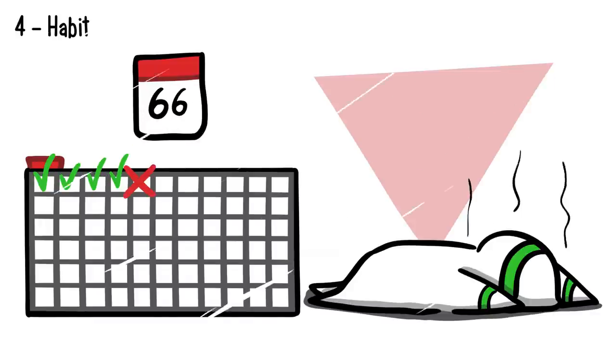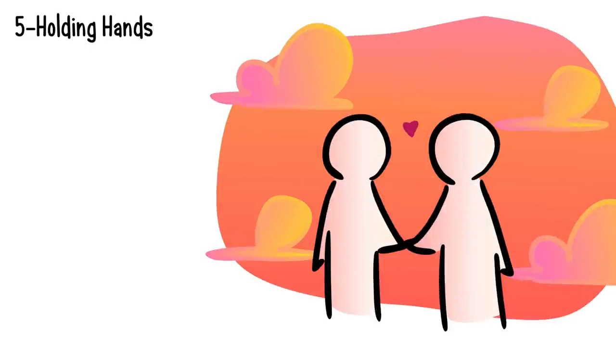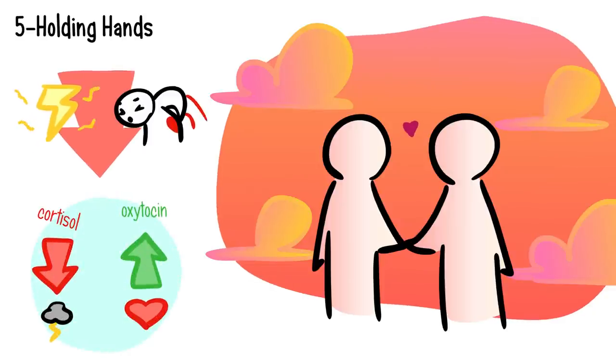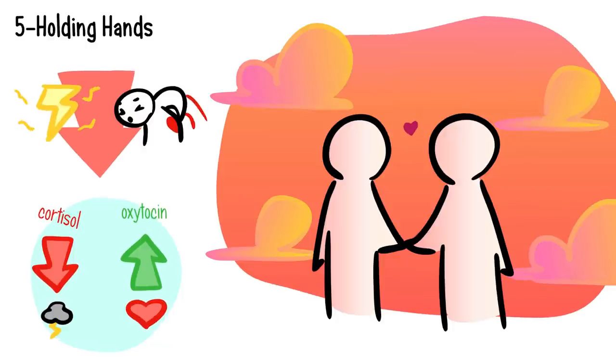Fact number five: holding hands. Do you fancy holding hands with a loved one? Well, I have good news for you. Holding hands with someone you truly care about can alleviate stress and physical pain. This is beneficial because it decreases cortisol levels and increases oxytocin. Cortisol is a stress hormone and oxytocin is a love hormone. Therefore, you end up feeling better after holding hands.